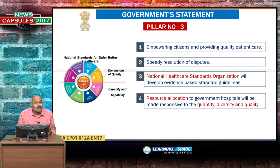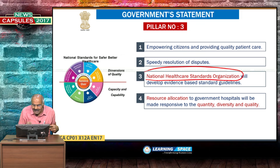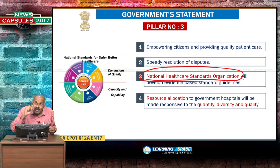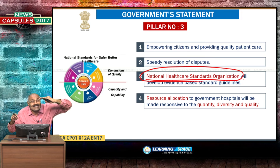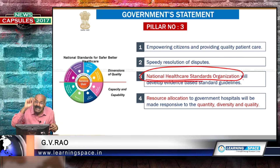The third pillar is to maintain standards in the medical field. A National Health Care Standards Organization will be developed to create guidelines. Standards will be set and all institutions must follow those standards. This is the third pillar.